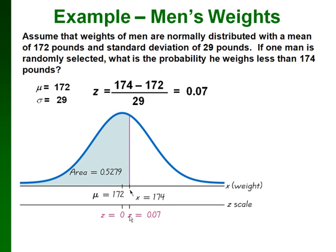Our x value is 174. That corresponds to a z-score of 0.07. And since our picture in this case would be going from our value of 174 pounds to the left, since we want to know the probability that a man weighs less than 174 pounds, we can just look up 0.07 in our table or use our Excel function and find our area is 0.5279.